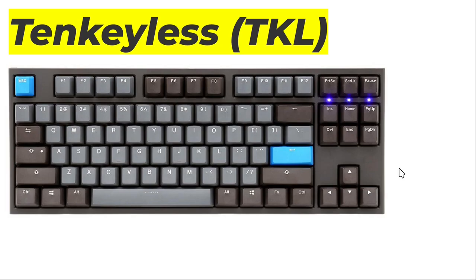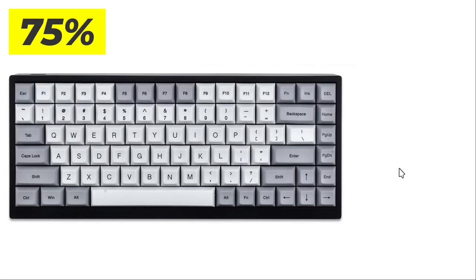So what if we can somehow make this tighter? When you do that, you get what's called a 75% keyboard. You still have your arrow keys, you still have your navigation cluster — most of it anyway. But now you have a much more compact keyboard with a lot of space on the right-hand side. Since a couple of keys might be missing, they are put on an additional layer called a function key.